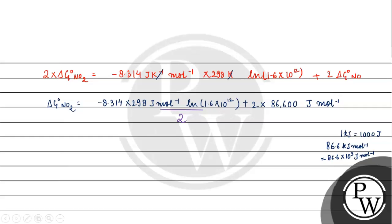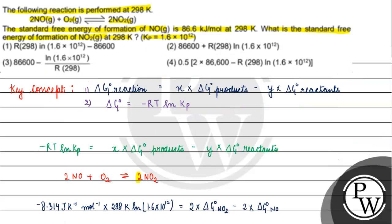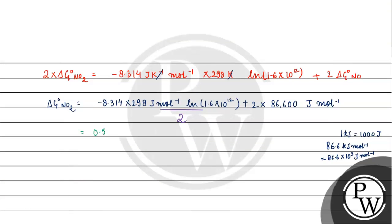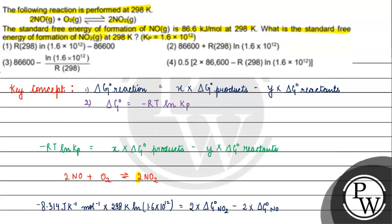This gives us the standard free energy of formation of NO₂. We divide the whole equation by 2. Looking at the options, option 4 matches: 0.5 into [2 × 86,600 minus 8.314 × 298 × ln(1.6 × 10 raised to the power 12)]. So the answer for this question will be option 4.